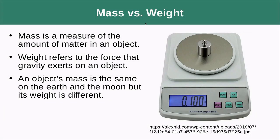Mass versus weight — this is a confusing thing because we tend to use these terms interchangeably. Mass is a measure of the amount of matter inside an object, while weight refers to the force that gravity exerts on an object. When we try to figure out how much mass something has, the best way is to weigh it — to see how much gravity is pulling on it in order to determine how much mass there is.